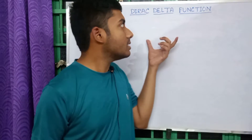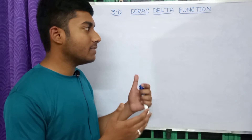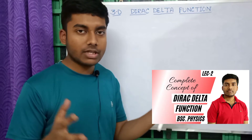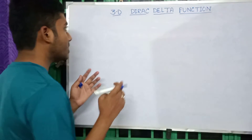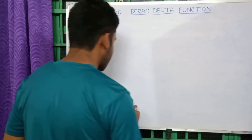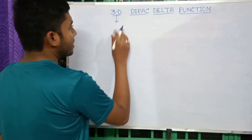Hello friends, welcome to Truth of Physics. In this video I will discuss the three-dimensional Dirac Delta function. I have previously made two videos on the Dirac Delta function, so you can watch those as well — the links are in the description box. If you have watched the previous video, lecture number two, you already understand the properties of the one-dimensional Dirac Delta function.